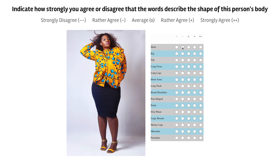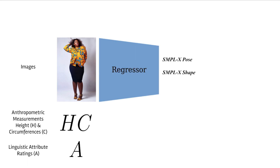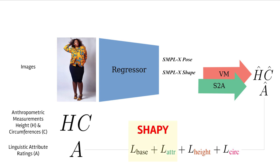We also collect shape attribute ratings for the model agency images. Next, we use our large dataset of images with anthropometric measurements and attribute annotations in network training. Our network ShapeY outputs SMPL-X pose and shape parameters. The SMPL-X shape is passed to our virtual measurements and shape-to-attribute modules. We define losses that encourage the predicted measurements and attributes to be close to the ground truth. We use an ablation study to test different combinations of losses. Interestingly, the model that only uses linguistic shape attributes for shape supervision is better than the model that only uses anthropometric measurements.